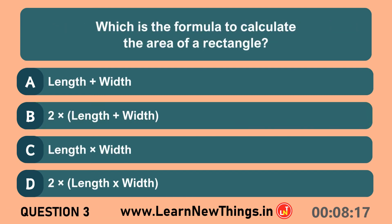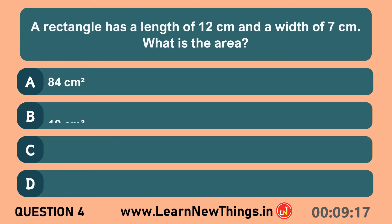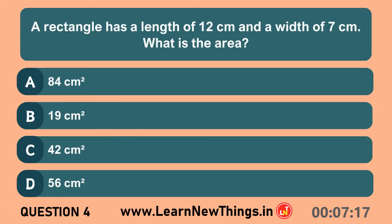Which is the formula to calculate the area of a rectangle? Length into width. A rectangle has a length of 12 centimeters and a width of 7 centimeters. What is the area? 84 centimeters square.